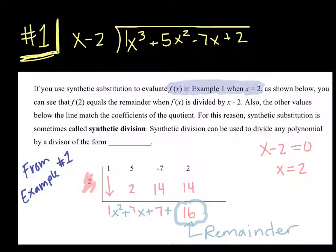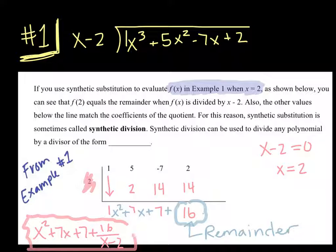If you had more values, it would just continue on, and the next value would be x cubed. So that last value is your remainder. When you divide, you get the same thing that you should have gotten the first time we did this. So your x cubed plus 5x squared minus 7x plus 2 divided by x minus 2 gives you x squared plus 7x plus 7 plus our remainder of 16 over x minus 2.